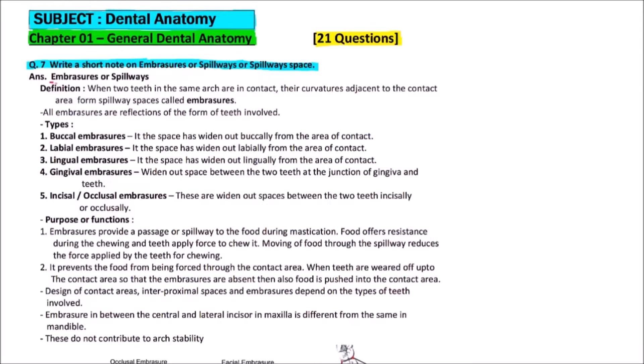First of all, what do you mean by embraces or spillways? When two teeth in the same arch, that is maxillary or mandibular arch, are in contact, two teeth should belong to the same arch. Their curvature adjacent to the contact area form the spillway spaces or embraces.